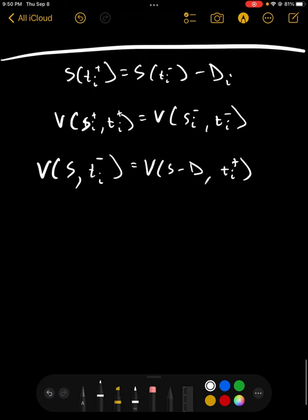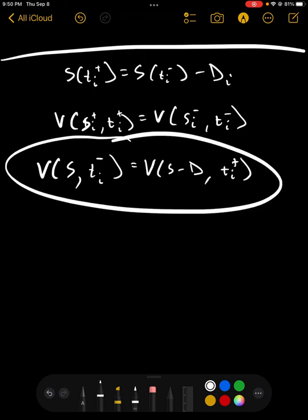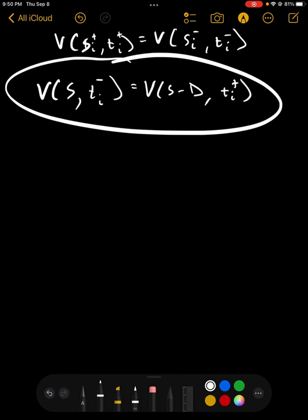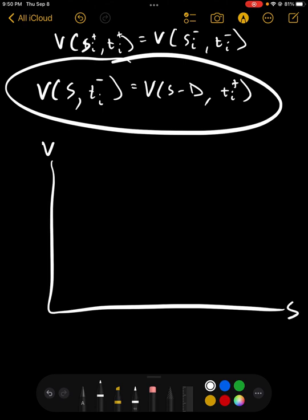So, what does this mean for the option value? And this is easiest to understand by looking at a graph. So, we're going to have the value be on this side of the graph, and we're going to have the stock price be the x-axis. Now, originally, our original stock price, we'll put this in green. Our original option value would be zero up to some point, and then it would start going like this.